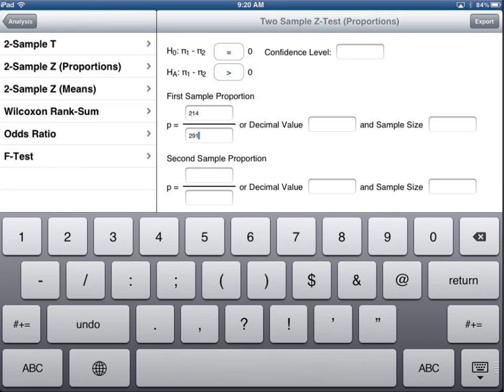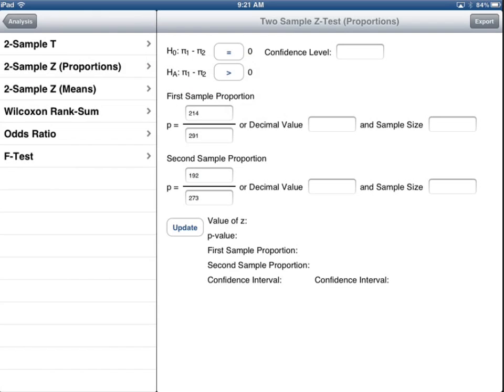This is 214 over 291. Now, if this was presented to me in the form of a decimal value, then I would put in the decimal value here and the sample size. But because I actually have it as a ratio, that's all I'm going to put in. And then likewise, I need to enter the information for the men, which is 192 over 273. And again, it's extremely important to make sure that these match. This first one is the women, which is actually number one, based on the way I wrote my null alternative hypothesis. The second is the men, which matches number two. So I will update.